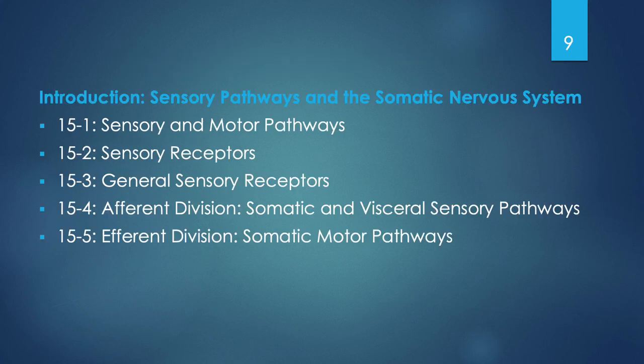Today's lecture is broken into five segments mirroring the textbook. First, an introduction to sensory pathways and the somatic nervous system. Then a discussion of sensory and motor pathways in general, followed by sensory receptors, then general sensory receptors. Next, the afferent sensory division covering somatic and visceral sensory pathways, and finally the efferent division covering somatic motor pathways.